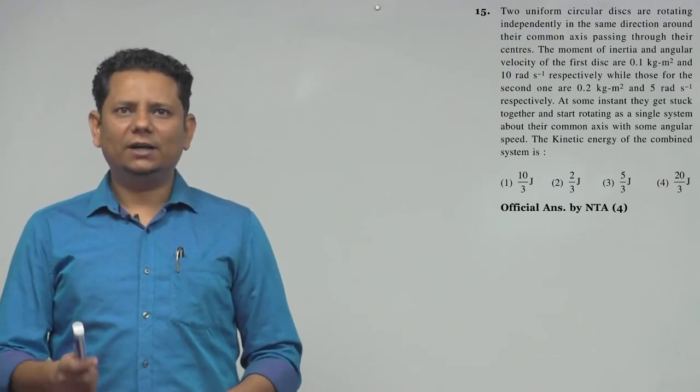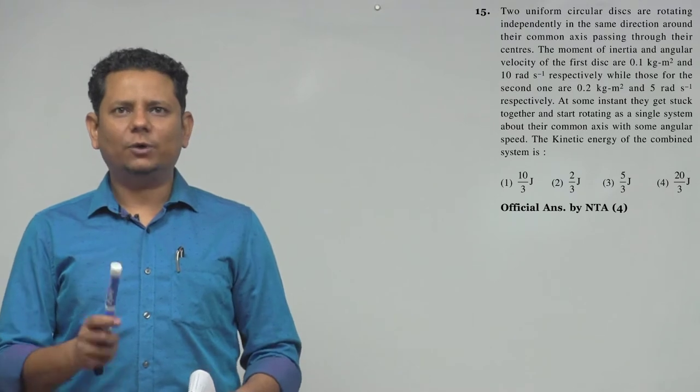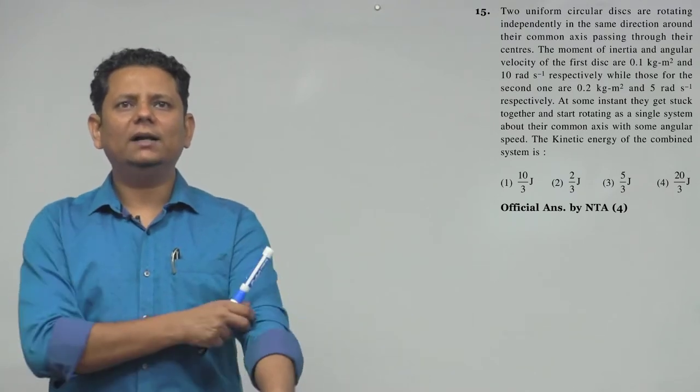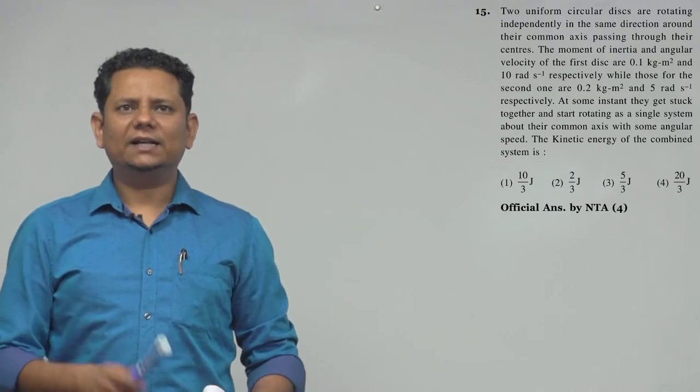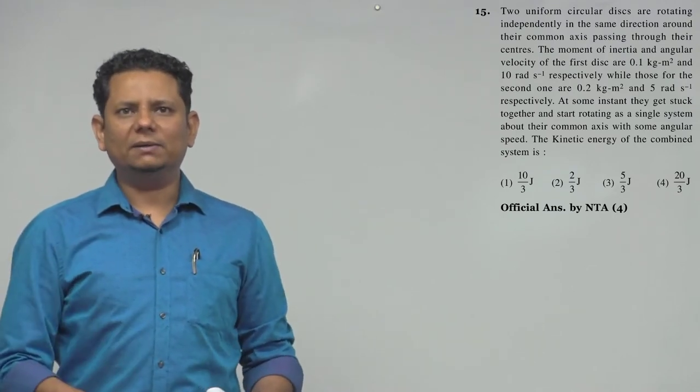The moment of inertia and angular velocity of the first disc are 0.1 kilogram meter squared and 10 radian per second respectively, while those for the second are 0.2 and 5 radian per second respectively.